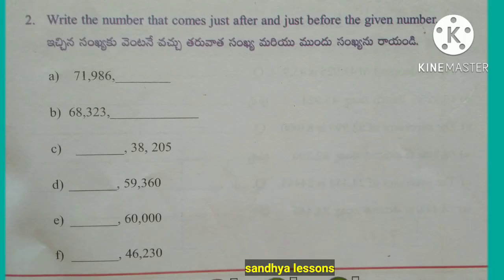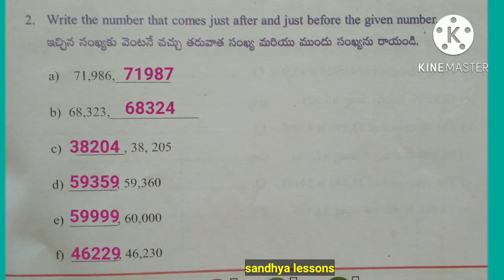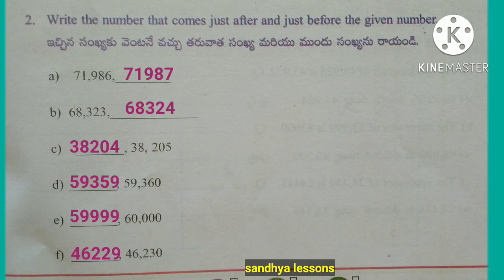Second question: write the number that comes just after and just before the given number. Successor of 71,986 is 71,987. Successor of 68,323 is 68,324. Predecessor of 38,205 is 38,204. Predecessor of 59,360 is 59,359. Predecessor of 60,000 is 59,999. Predecessor of 46,230 is 46,229.